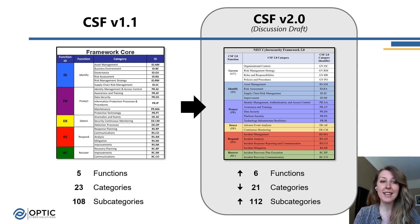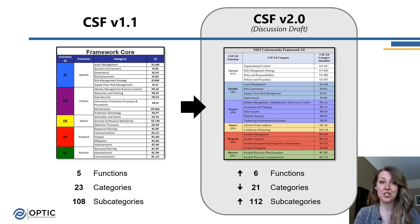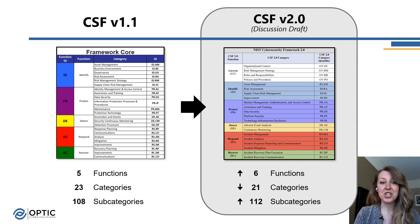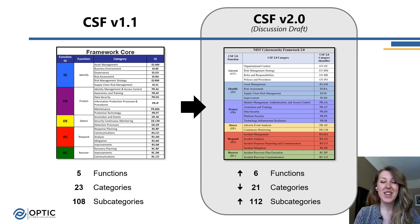Here I wanted to start with a quick side-by-side of 1.1 and 2.0. The biggest change in the discussion draft for 2.0 is that we're moving from five functions to six functions, adding that Govern function — pulling the governance category out of the Identify function from 1.1 and moving it into its own function, expanding it into four categories. We're also going from 23 categories to potentially 21, and 108 subcategories to 112.